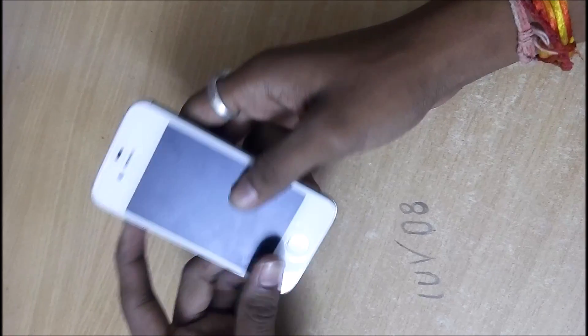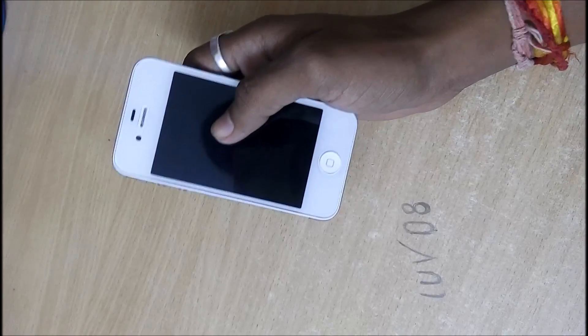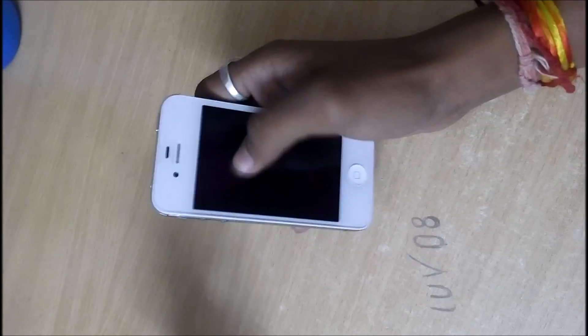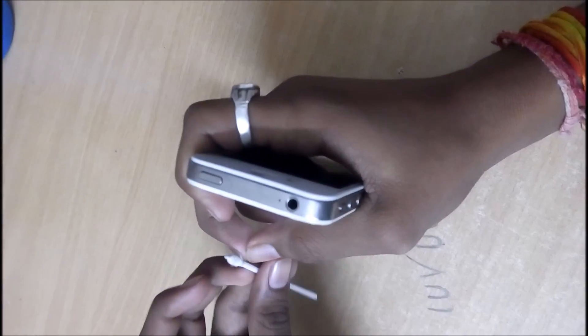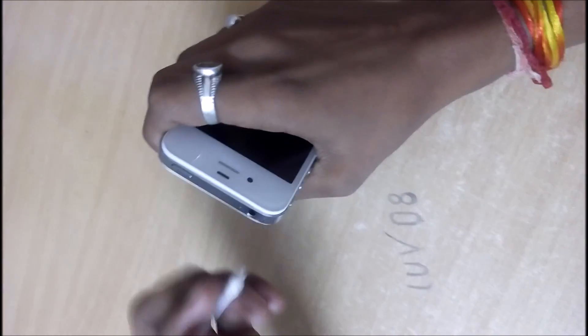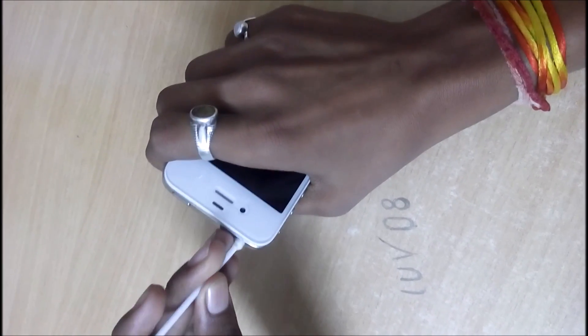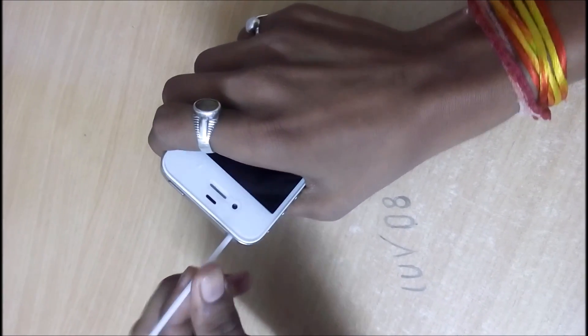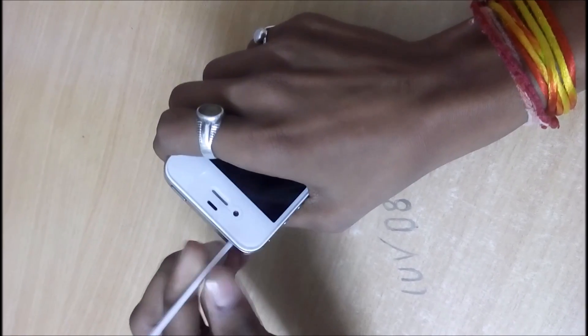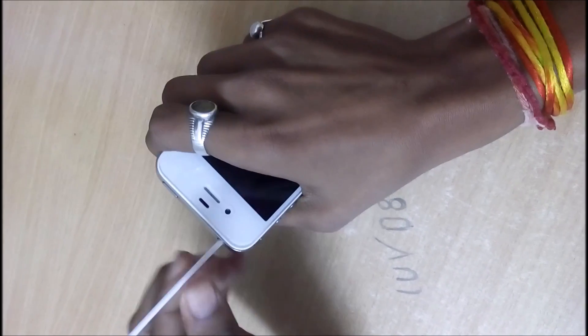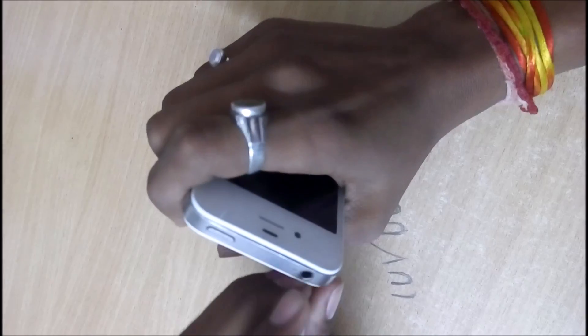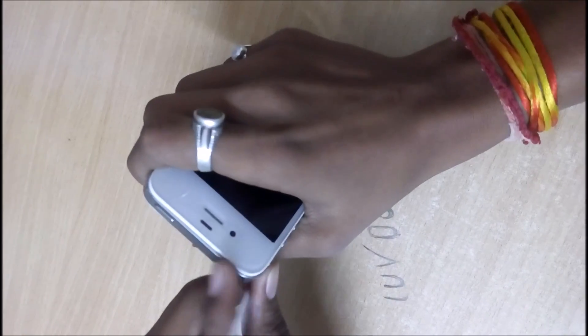So what we're going to do is take an earbud and remove the excess cotton so that it can insert in the audio jack. Just try to rotate it and remove the dirt from inside.